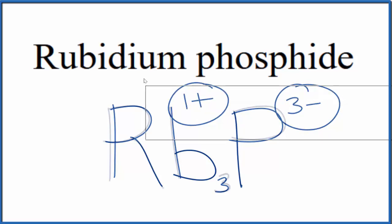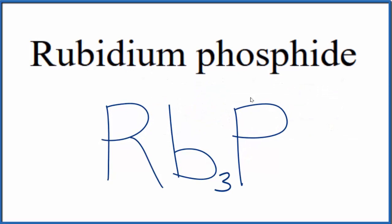So this is the formula for rubidium phosphide, Rb3P. This is Dr. B, and thanks for watching.